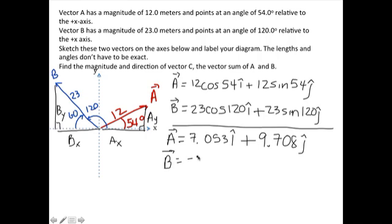B comes out to be, the x component is negative 11.50 in the i direction and 19.92 in the j direction. If you are getting different numbers here, even though you have the 12 sine 54 and 23 sine 120, if those numbers don't correspond to this, that's because your calculator is in radians instead of degrees. Don't let goofy things like that trip you up and get you a wrong answer.